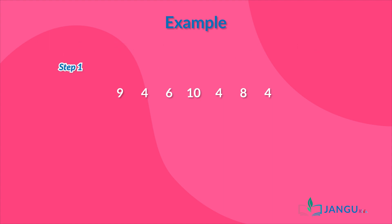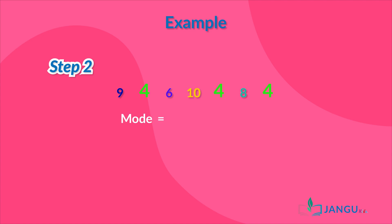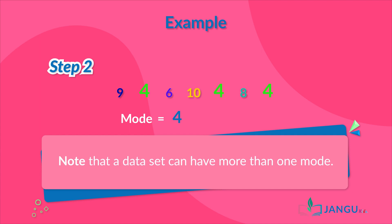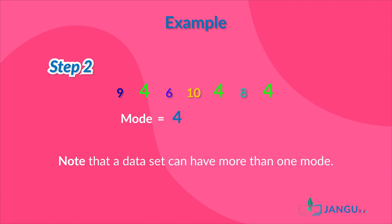to find the mode you simply: one, look at the whole data set carefully and count the number of times each individual data appears. In this case you can see that four is the highest occurring number as it appears three times, while the rest of the numbers only appear once. Therefore, we can say that the mode of the data set is four. Note that a data set can have more than one mode.